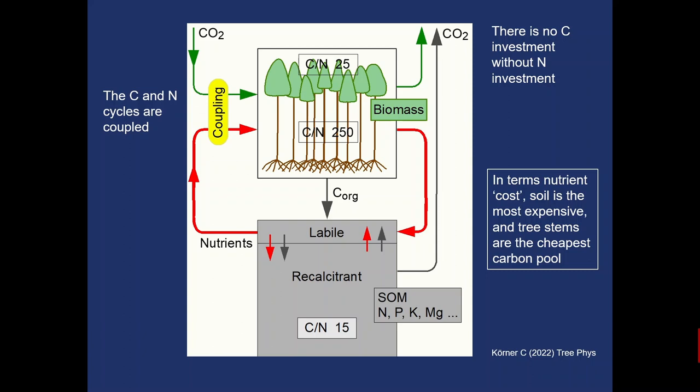People always hope to sequester carbon to the soil, but if you look at the nutrient-to-carbon ratio, soil is the worst place you would want carbon to go. There is no other place in an ecosystem more expensive in terms of nutrients than soil organic matter. The C:N ratio in soils is around 15 — you need an enormous amount of nutrients that are no longer available for plant growth if you sequester carbon to the soil. In contrast, tree stems have C:N ratios between 200 and 400, making them by far the cheapest way in terms of nutrients to sequester carbon.